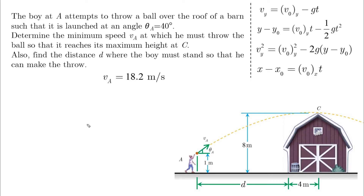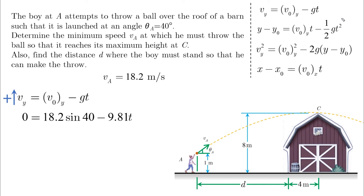Next, to find the distance d, which is part of delta x, VA is known, but we need to find the time first. To do that, we can use either the first or the second equation. We'll use the first equation because it's easier. So, Vy is 0 and the initial Vy is 18.2 sin 40, and T is found to be 0.195 seconds.